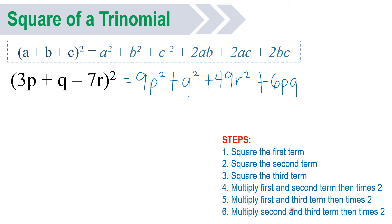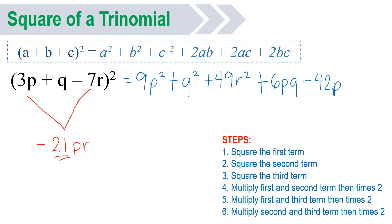Then fifth step: multiply first and third term, then times 2. First term is 3p, third term is negative 7r. 3 times negative 7r — 3 times negative 7 will be negative 21. Copy the variable pr, then times 2. So 21 times 2, you will have negative 42pr.